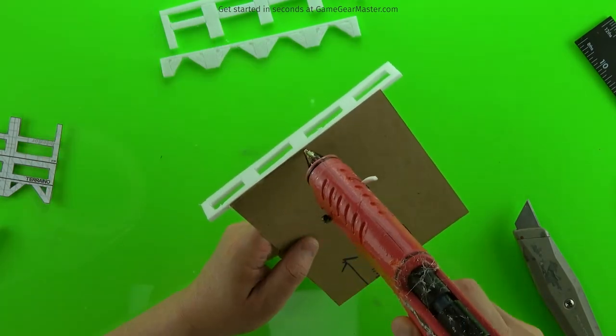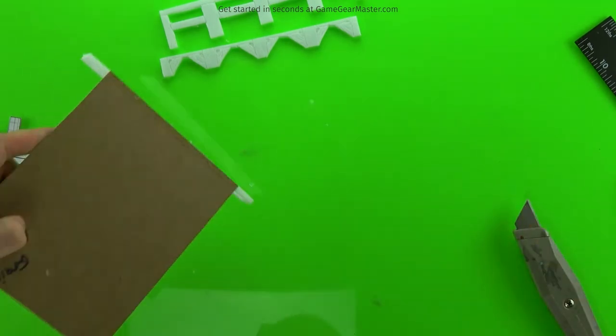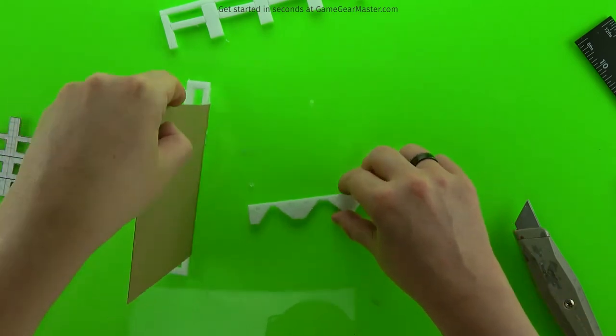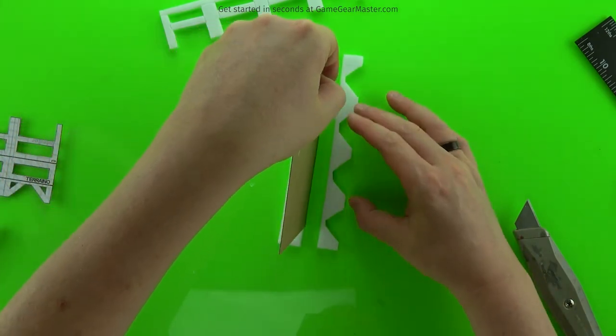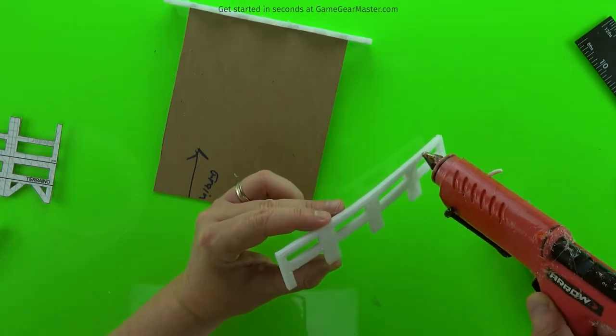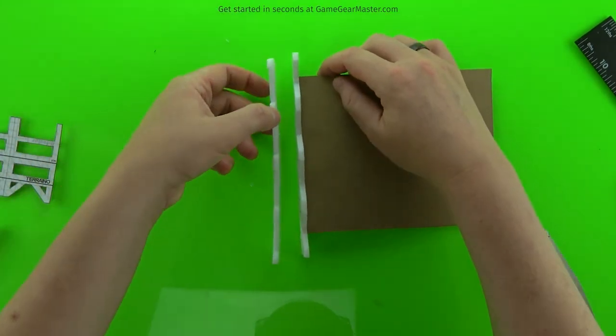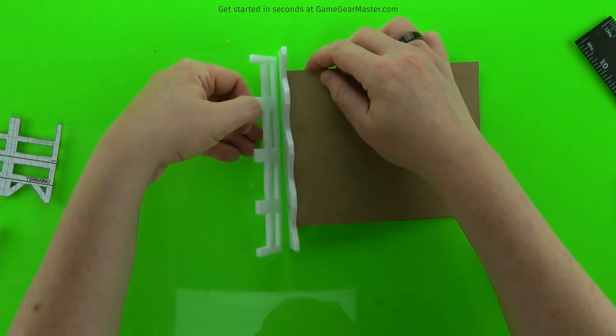And then we'll glue on the bottom piece. And we'll use our work surface to line that up. And then we'll put down the last component on the front of the railing. And we'll use the work surface to line that up as well.